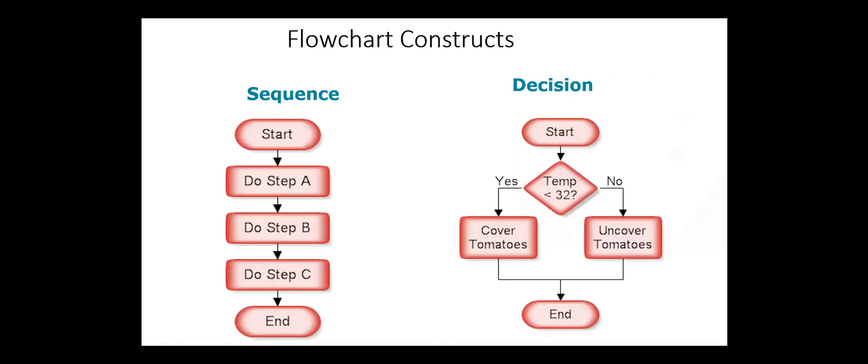In the sequence flowchart constructs, after performing a specific action, we move to the next action. In the decision flowchart constructs, a condition is tested. If the condition is true, a statement or a group of statements are executed, and if the condition is false, another statement or group of statements will be executed. So depending on the condition, only one block of statements will be executed.